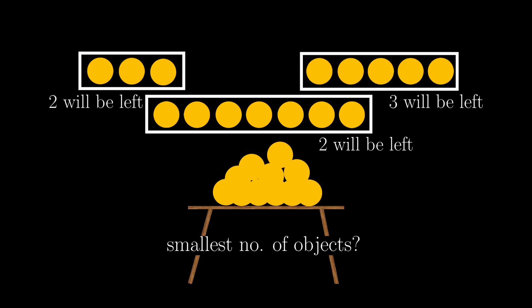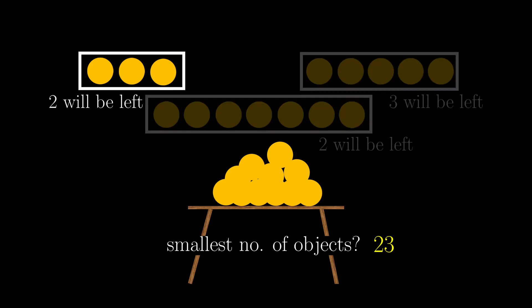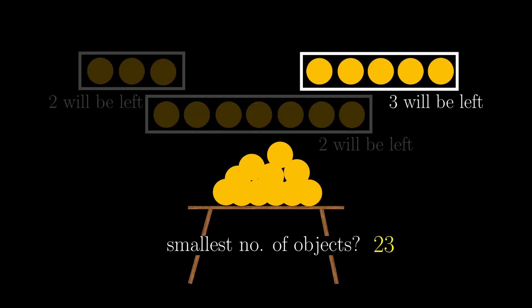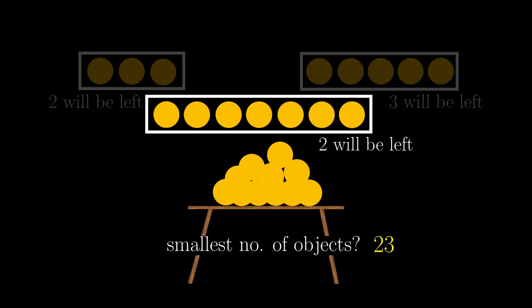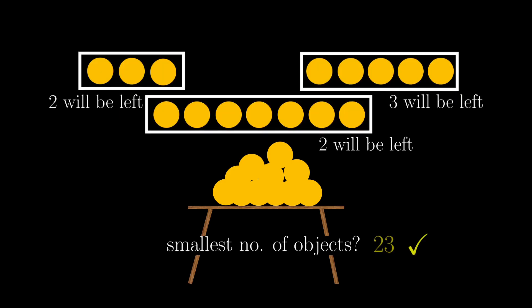The numbers here are not very large, so you can start by trial and error, and get the answer to be 23. It leaves a remainder of 2 divided by 3, a remainder of 3 divided by 5, and a remainder of 2 when divided by 7. But if the numbers are much larger, how can you derive the answer?